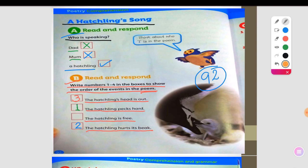And later, the hatchling is free. So that's the last event. First, the hatchling pecks hard. Second, the hatchling hurts its beak. And then the hatchling's head is out. And the last event, the hatchling is free.